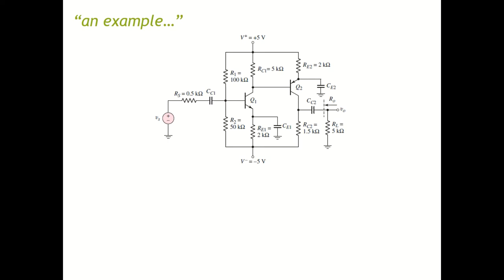Let's go through one example together. We have a cascade configuration of two common-emitter circuits. The first common-emitter circuit is centered around BJT Q1, with the source signal supplied through a voltage divider bias circuit. The second stage involves Q2. If you do the DC analysis on all of the parameters in this circuit, you can see that the circuit is operating in forward active mode, and therefore you can use it as an amplifier.